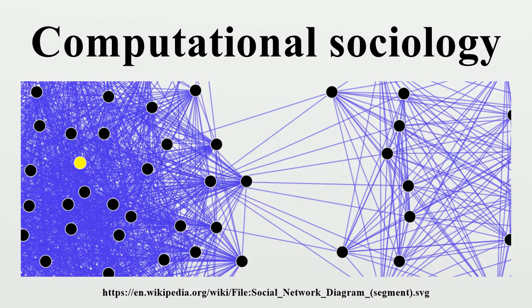In relevant literature, computational sociology is often related to the study of social complexity. Social complexity concepts such as complex systems, non-linear interconnection among macro- and micro-processes and emergence, have entered the vocabulary of computational sociology.